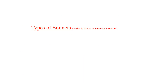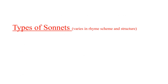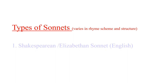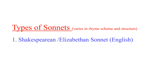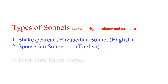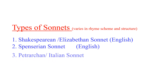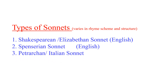The types of sonnets vary in rhyme scheme and structure. The first is the Shakespearean or Elizabethan sonnet, the second is the Spenserian sonnet, and the third is the Petrarchan or Italian sonnet. Among these, the Shakespearean and Petrarchan sonnets are more popular.